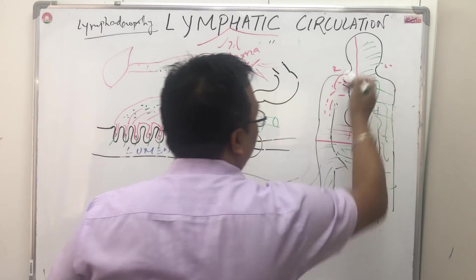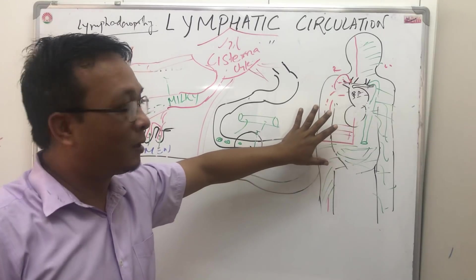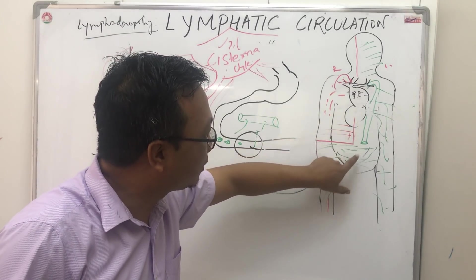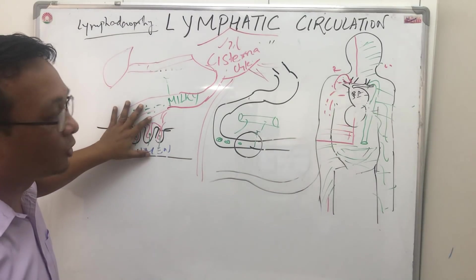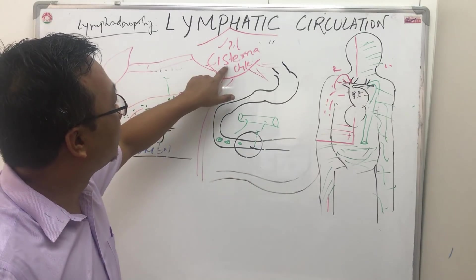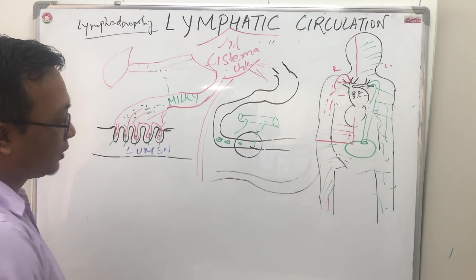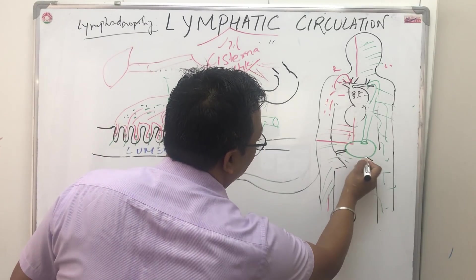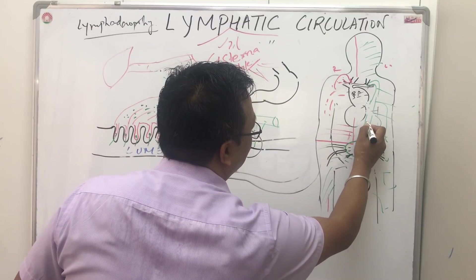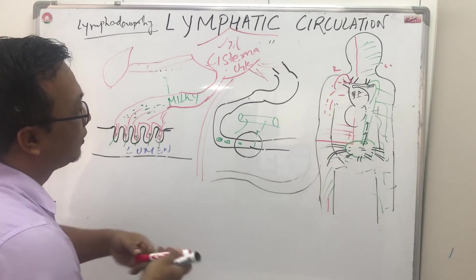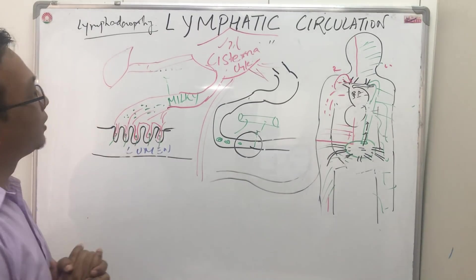The left lymphatic duct or thoracic duct is collecting a lot more than the right lymphatic duct. Because the thoracic duct collects from the small intestine, its fluid is milky in color — this is called chyle. To recap: chyle from the digestive system is collected in the cisterna chyli, from which the thoracic duct starts. The left lymphatic duct is also called the thoracic duct.